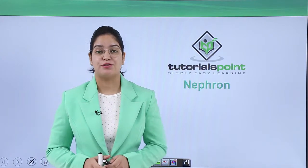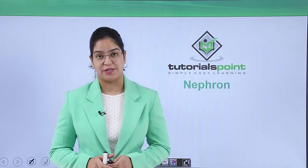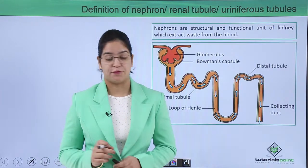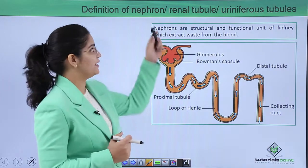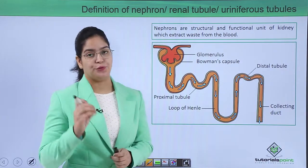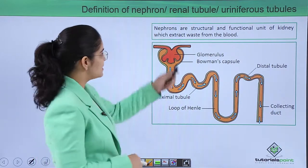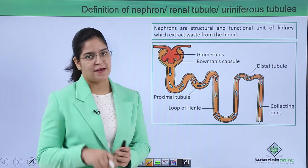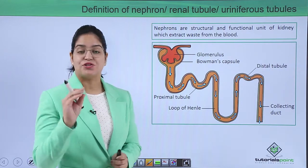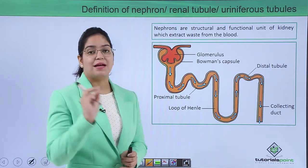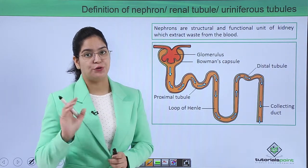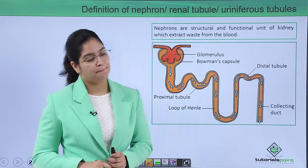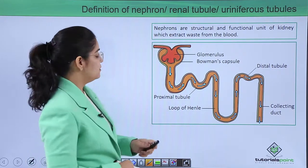Hello guys, welcome back to Tutorials Point. Today we are going to learn about the nephron, which is also known as the renal tubule and the uriniferous tubule. Nephron is the structural and functional unit of the kidney, which extracts waste from the blood.